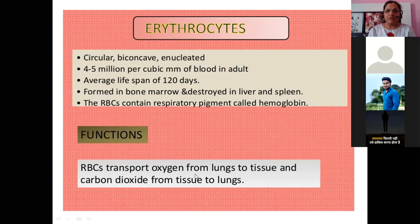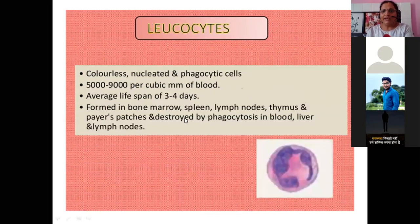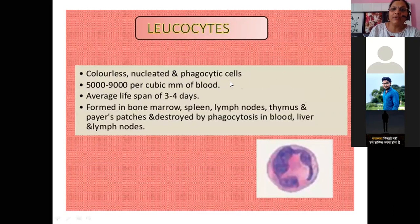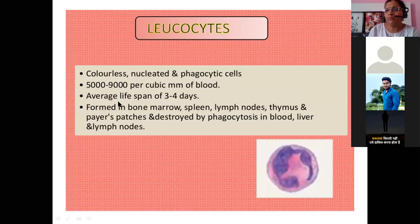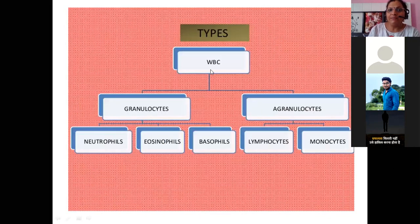RBCs transport oxygen from lungs to tissue and carbon dioxide from tissue to lungs. Leukocytes — WBCs — are colorless, nucleated, and phagocytic cells. Normal count is 5,000 to 9,000, or 4,000 to 11,000 depending on the reference. Average lifespan is 3 to 4 days. Formed in bone marrow, spleen, lymph nodes, thymus, and Peyer's patches; destroyed by phagocytosis in blood, liver, and lymph nodes.